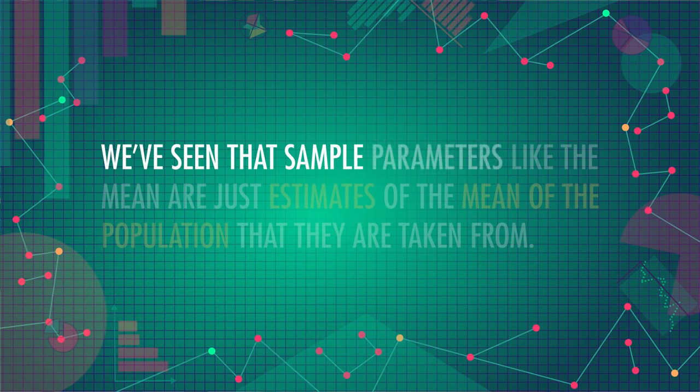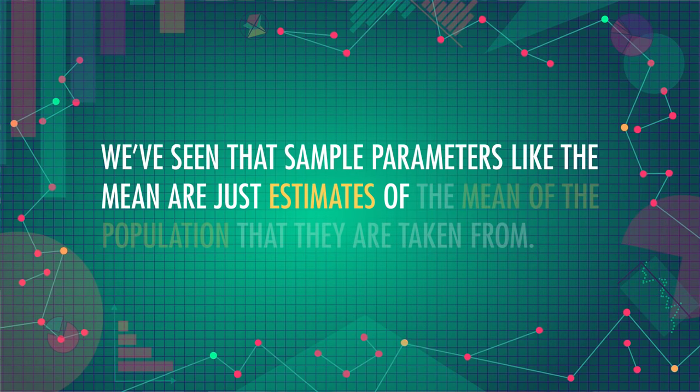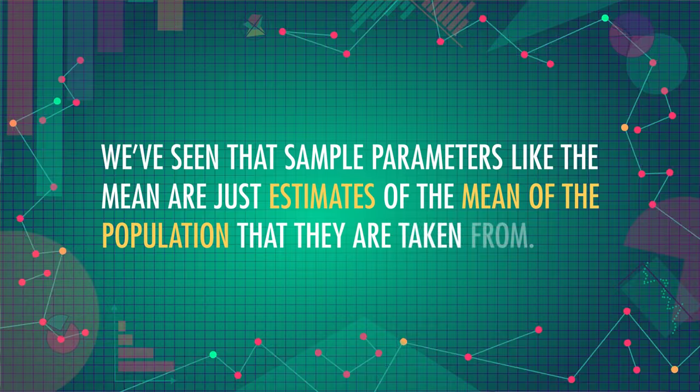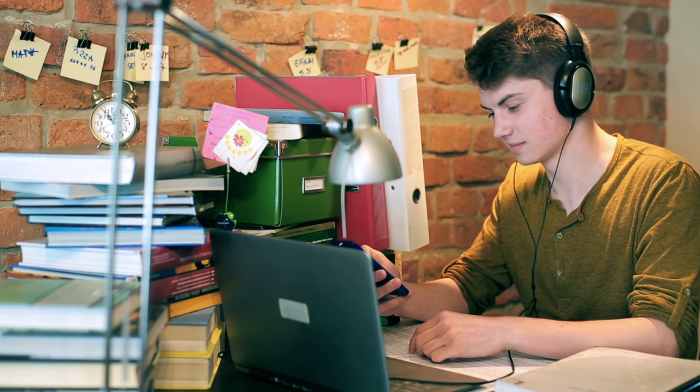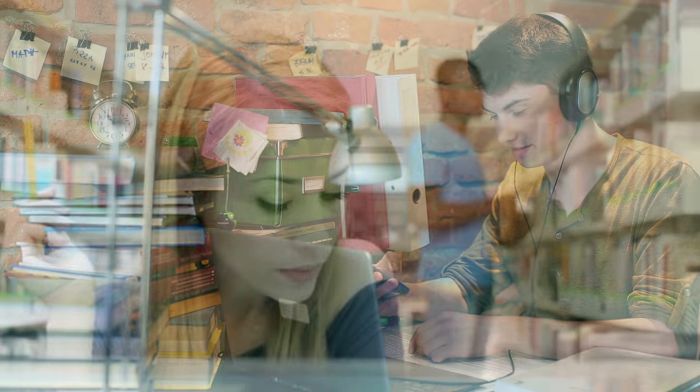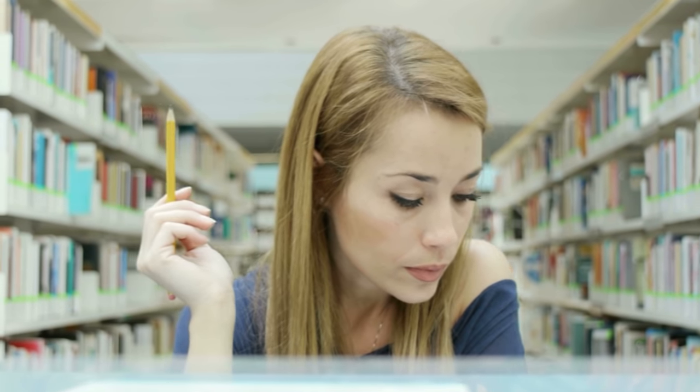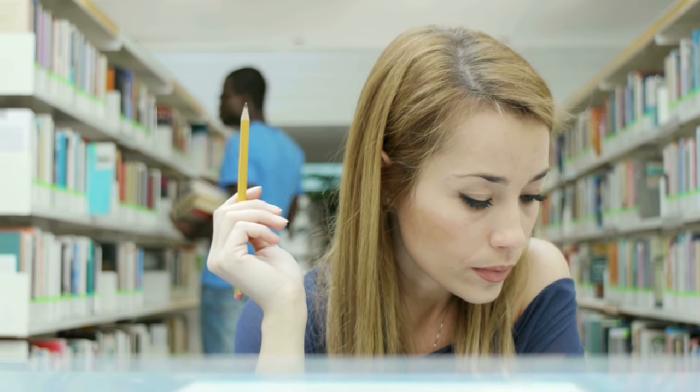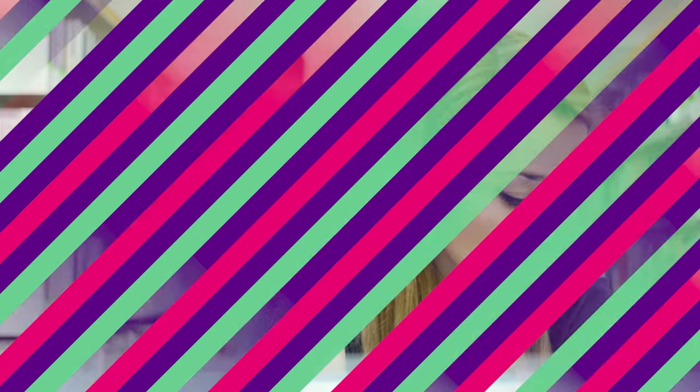So Mozart's good — problem solved, right? Unfortunately, no. Sample parameters like the mean are just estimates of the population mean. The sample mean score of the Mozart group is higher, but we don't have sufficient evidence that the population mean of Mozart listeners is higher than those who worked in silence. We may have gotten an especially high sample mean that isn't close to the true population mean. So we need a way to test our hypothesis while taking into account the random variation of sample means.